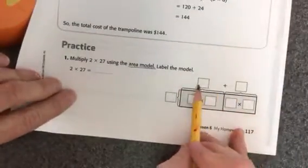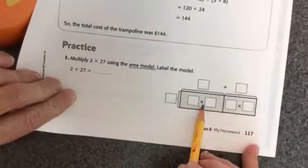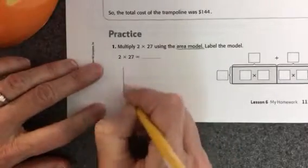Labeling the model just means to write the numbers on the outside. Now you can use this one if you want to, or you can draw your own. I'm going to draw my own here.